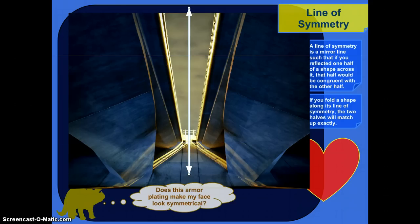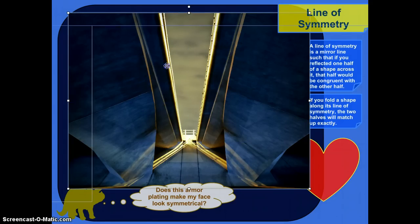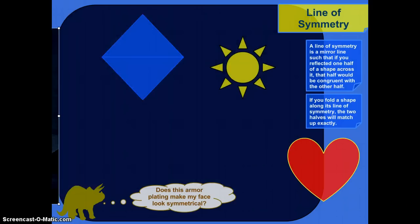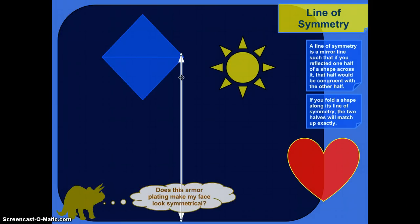So let's look at symmetry more specifically with geometric shapes. Let's get the real world out of here. No more real world. Let's look at a few different shapes here and see if we can draw lines of symmetry. The line of symmetry is a mirror line, such that if you reflected one half of the shape across it, that half would be congruent with the other half.